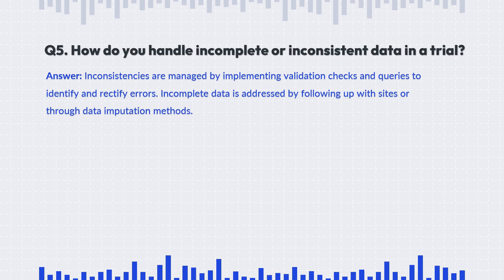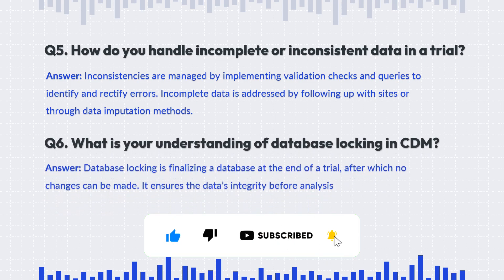The next important question is: how do you handle incomplete or inconsistent data in a clinical trial? Inconsistencies and errors in data are managed by implementing validation checks. As a clinical data management professional, you are responsible for validation checks and query identification and rectification of errors. You fire queries in the EDC systems and eCOA diaries, and the incomplete data is addressed by following up with the site or the CRAs, ensuring that the data throughput is of a certain quality.